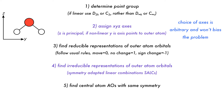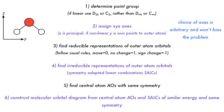Then find the atomic orbitals on the central atom with the same symmetry as the SALCs. And finally, combine the group orbitals with the central atom atomic orbitals of the same symmetry and similar energy to form the molecular orbital diagram.